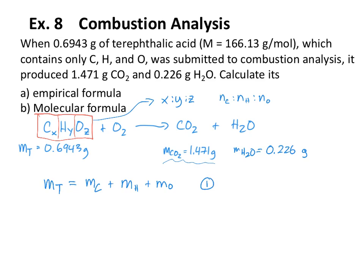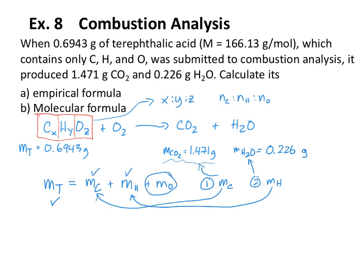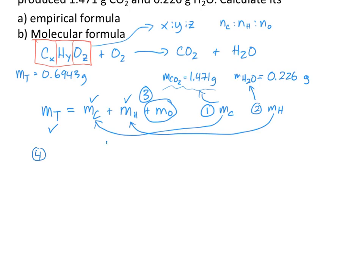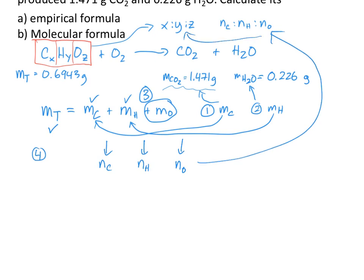Step one is to find the mass of carbon in the CO₂, which equals the mass of carbon in our original compound. Step two is to find the mass of hydrogen in water, which equals the mass of hydrogen in our original compound. Step three: since we know the total mass, the mass of carbon, and the mass of hydrogen, we can calculate the mass of oxygen. Step four will be to convert all three masses to moles of carbon, hydrogen, and oxygen. Once we have those three numbers, we make a ratio to get x, y, and z — giving us our empirical formula.